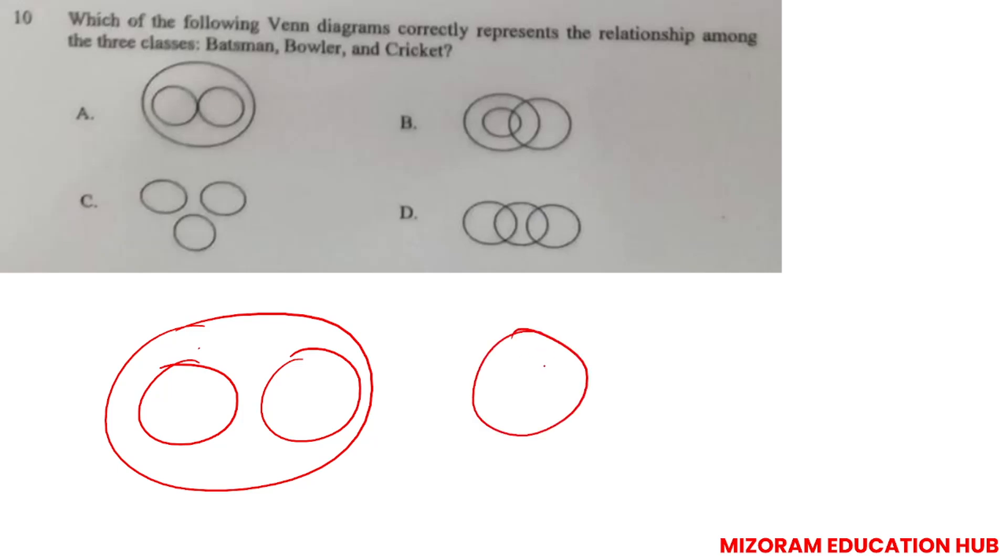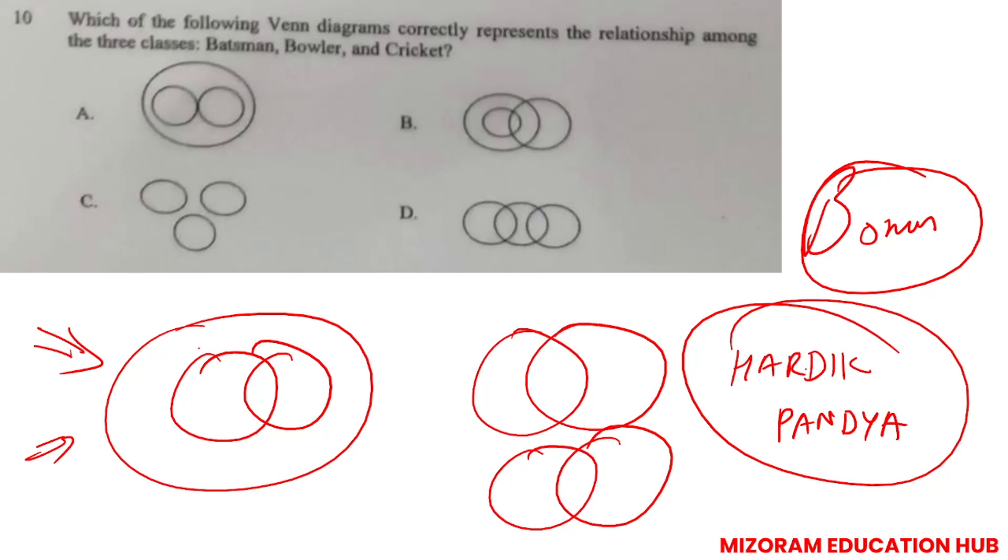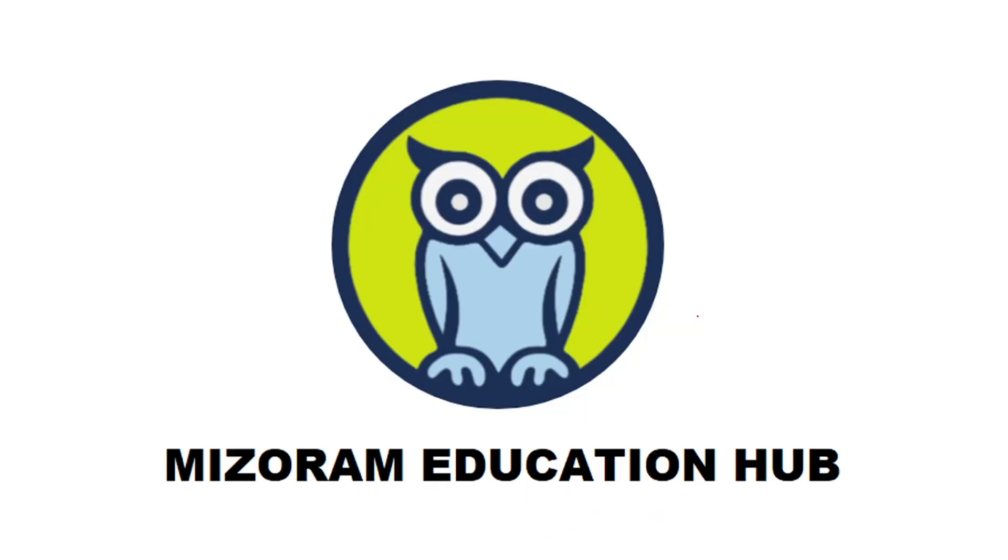Some batsmen can be bowlers or some bowlers can be batsmen. So there should be intersection between these two. In the exam, this is actually the correct answer - they should intersect. Few bowlers can be batsmen and few batsmen can be bowlers. Best example is all-rounders like Hardik Pandya - they can ball and be perfect batsmen. So thank you so much for watching this video. Next video will be uploaded soon. Thank you.